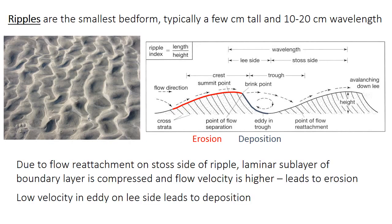Ripples form because of erosion on the shallowly sloping stoss side, or upstream side of the ripple. In the diagram, the flowing water path detaches from the sediment at the very crest of the ripple at the brink point, and then reattaches at some point along the stoss side. Where it reattaches, the laminar sublayer of the boundary layer becomes compressed and thinner, so thinner flow leads to higher velocity, and as you learned in the previous lecture, higher velocity is more able to erode and transport sediment. There's an eddy in the trough — a backwater — where the water swirls around slowly, and that slower velocity on the lee face leads to deposition. Because of this pattern of erosion on the stoss side and deposition on the lee side, ripples migrate downstream.